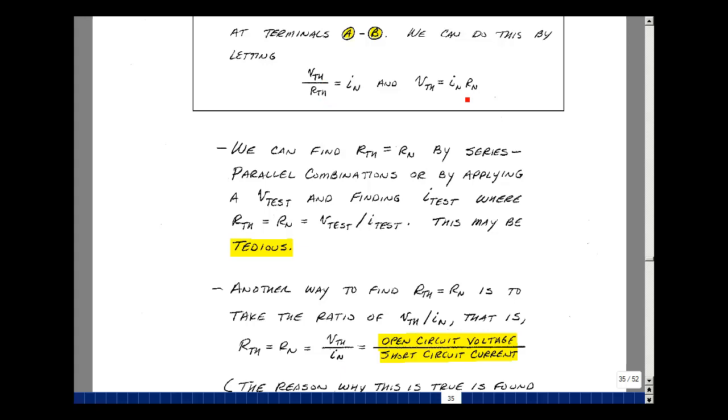Actually the same is true right over here. V Thevenin divided by I Norton is equal to R Norton, which is R Thevenin. You can find the Norton resistance, which is equal to the Thevenin resistance, by taking the ratio of the open circuit voltage to the short circuit current. Sometimes this is easier to do because we are opening and shorting things.